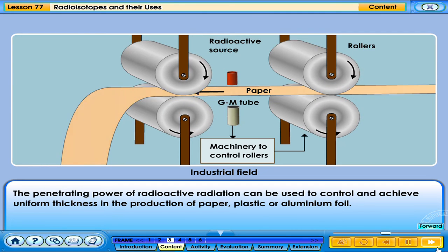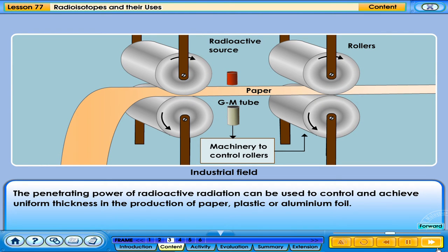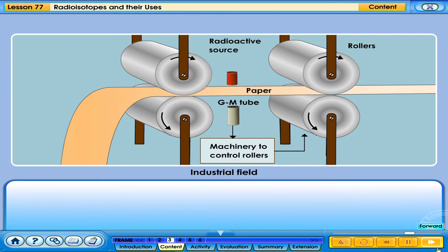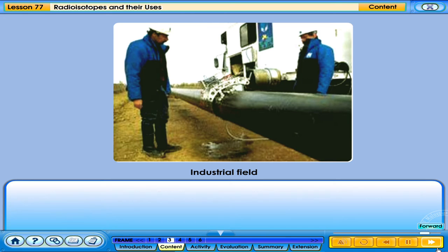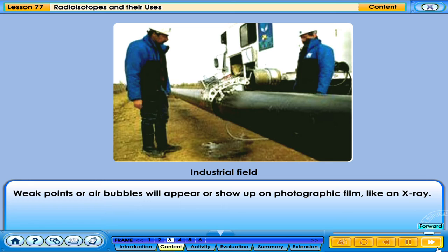The penetrating power of radioactive radiation can be used to control and achieve uniform thickness in the production of paper, plastic, and aluminium foil. Gamma radiations are also used to check for metal cracks or defects in welding seams — weak points or air bubbles will show up on photographic film, like an X-ray.